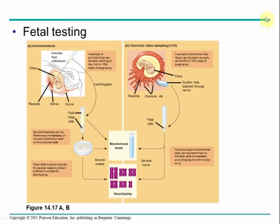Here's what it looks like — amniocentesis on the left, inserting a needle into the mother's stomach and drawing out some of the amniotic fluid, growing out the cells and creating a karyotype, then looking at that karyotype to see if it's normal. And here you see CVS or chorionic villus sampling — same idea: take fetal cells, look at them under a microscope to identify a karyotype. And we are done.